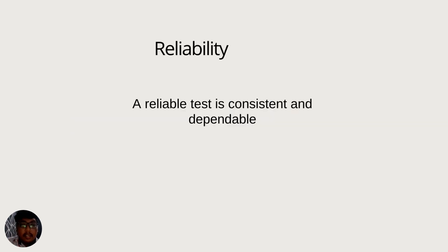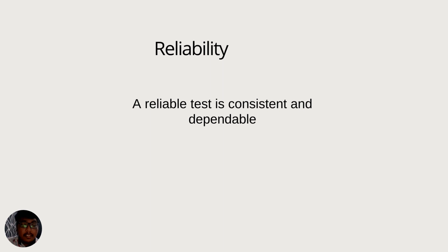The next principle is reliability. A reliable test is consistent and dependable. The issue of reliability may be addressed by considering a number of factors that might contribute to the unreliability of the test. The most commonly related issue is caused by temporary illness, a bad day, anxiety, and other physical or psychological factors, which may cause an observed score to deviate from one's true score.